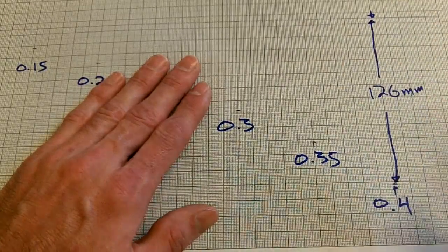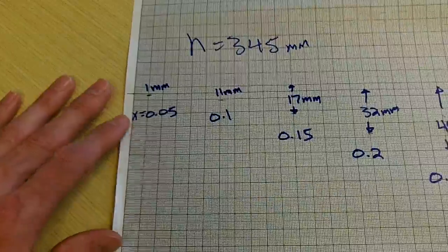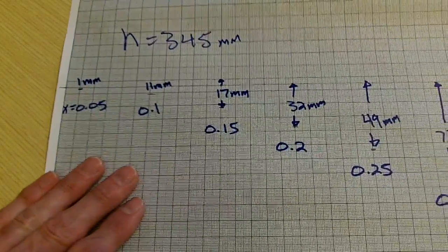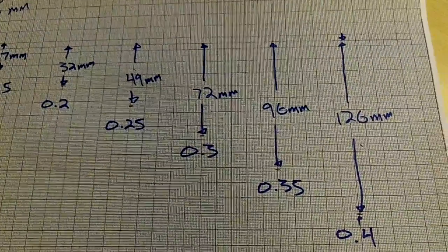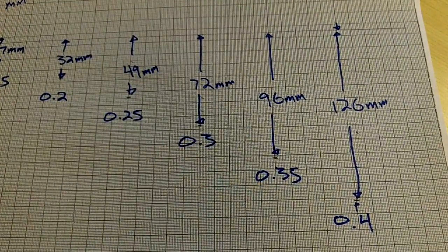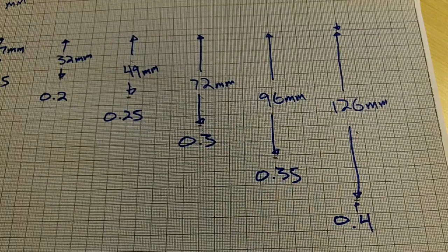So I'll go ahead and make the measurement for all of the other points as well. I've gone through and measured all of the vertical distances at each of the corresponding horizontal positions. And now we'll translate that data into an Excel spreadsheet.